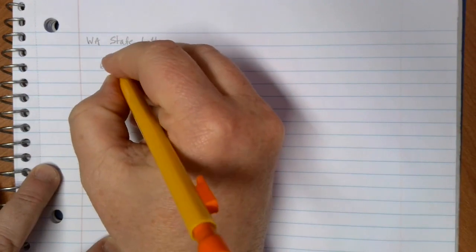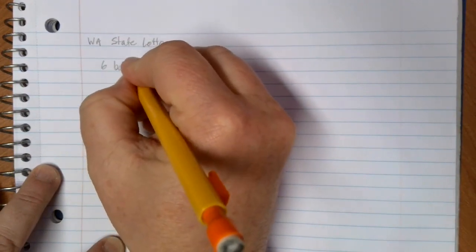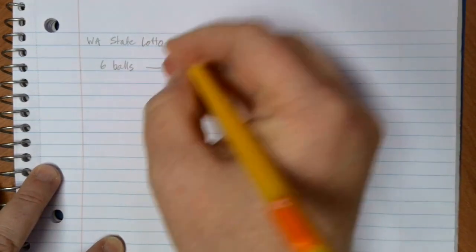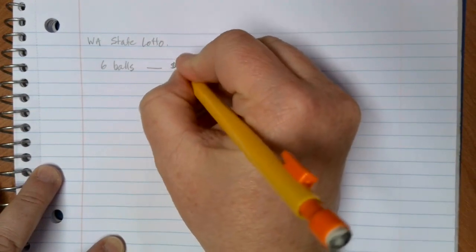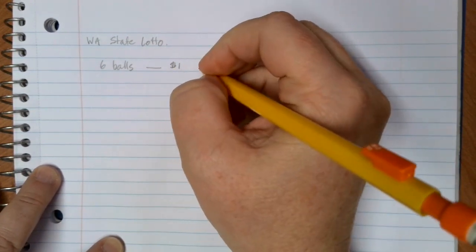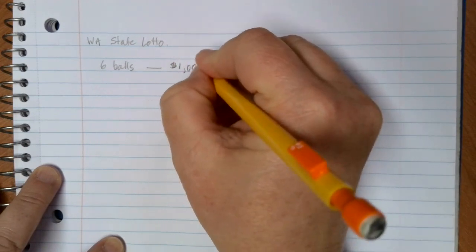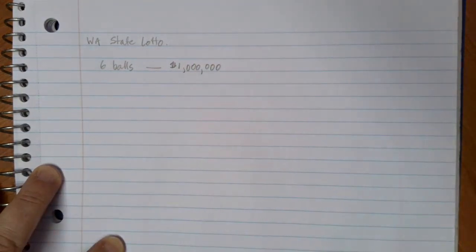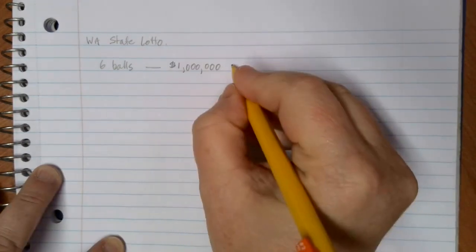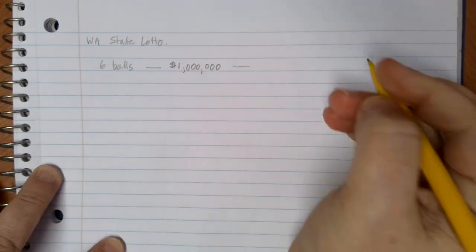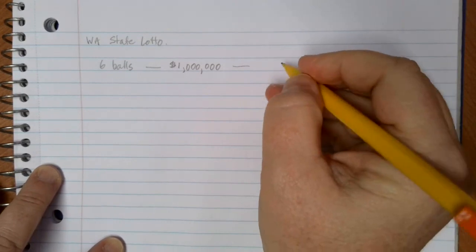If you get all six of the balls chosen correctly, then you win the jackpot. The starting jackpot is $1 million, and it's going to keep growing until someone wins the grand prize. Let's start with this $1 million, what it would be for the opening lotto day.